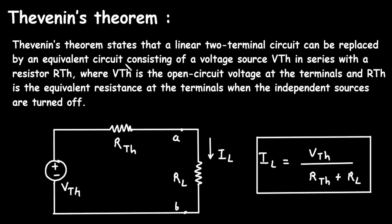...by an equivalent circuit consisting of a voltage source. Here we can see this is the Thevenin's equivalent circuit. It consists of a voltage source called VTH — that is Thevenin's voltage — in series with a resistor RTH.